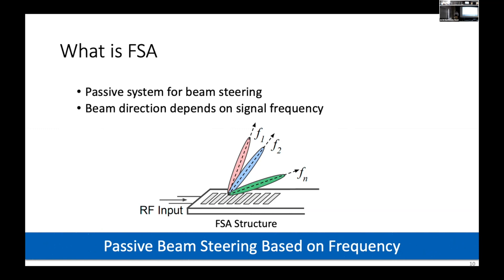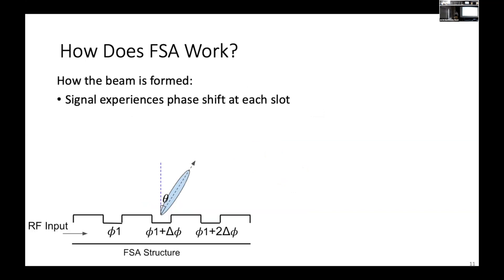Let's take a look at the FSA working principle. As shown in the figure on the bottom left, when the input signal travels through the FSA structure, it radiates into the air through the radiating slots on the structure — the little notches shown in the figure. While the signal travels through the structure, it experiences a different amount of phase shift at each slot. Thus the signals combine constructively in a certain direction, forming a beam. This is done passively as the signal travels through the antenna structure.